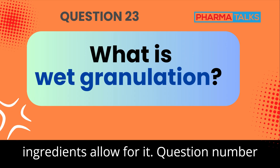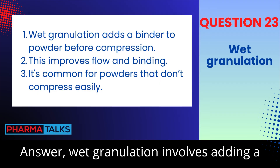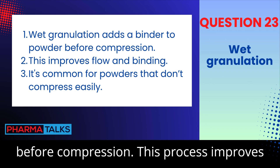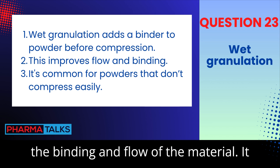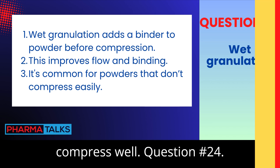Question 23: What is wet granulation? Wet granulation involves adding a liquid binder to powder to form granules before compression. This process improves the binding and flow of the material, and is commonly used for powders that do not compress well.